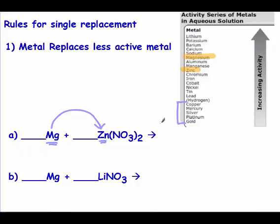Back to this problem — our magnesium is kicking out zinc. Zinc gets kicked to the curb. Magnesium combines with nitrate. Just like before, you have to check the charges. Magnesium is a plus two and nitrate is a negative one, so those go together. We do not carry over any subscripts unless they're part of that polyatomic ion. The three got carried over, but the two did not — the two on the product side is because that's how magnesium and nitrate go together.